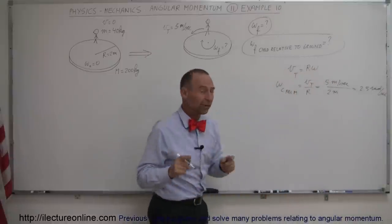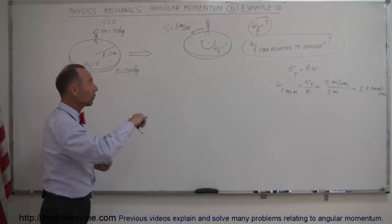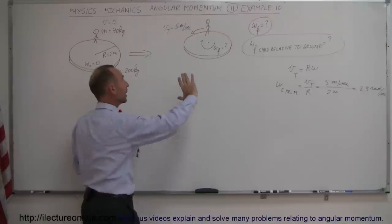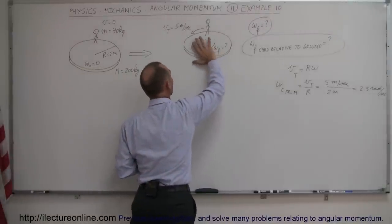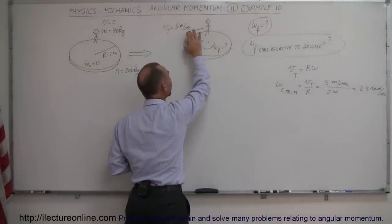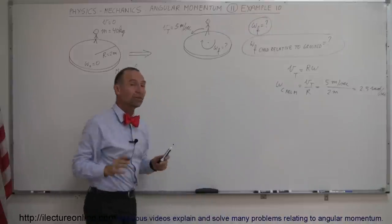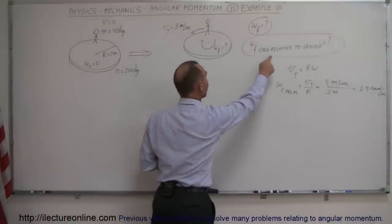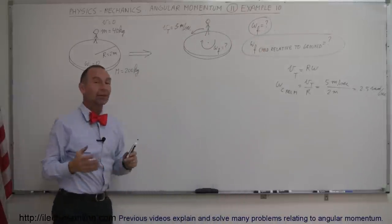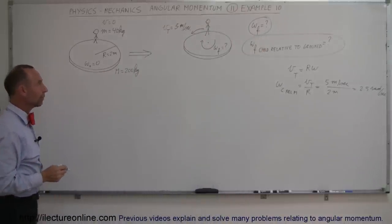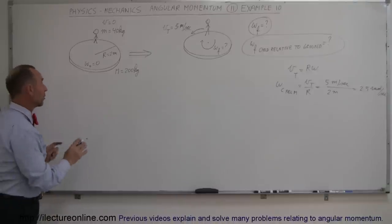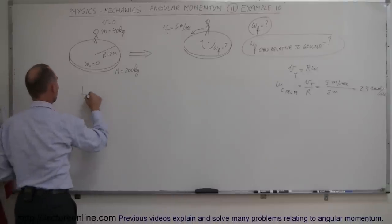So relative to the merry-go-round, the child will be moving at 2.5 radians per second. But at the same time the merry-go-round will be rotating in the opposite direction, so relative to the ground the angular velocity will be somewhat different — and that's what we're trying to find. Angular momentum conservation is what will get us there.